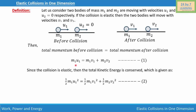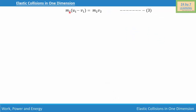Let's simplify equation 1. We move m1·v1 to the left side, giving us m1·u1 − m1·v1 = m2·v2. Taking m1 as common, we get m1(u1 − v1) = m2·v2, and this is our equation number 3.